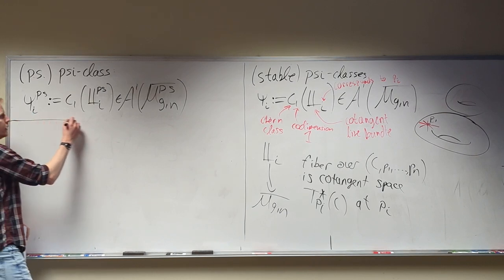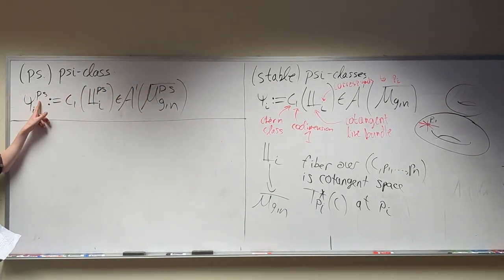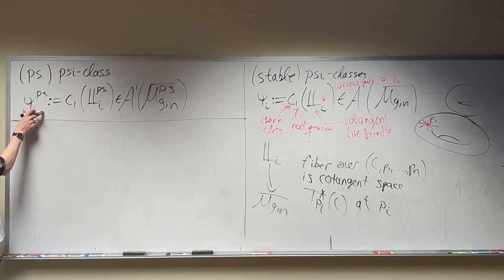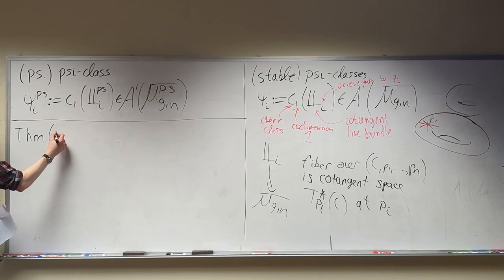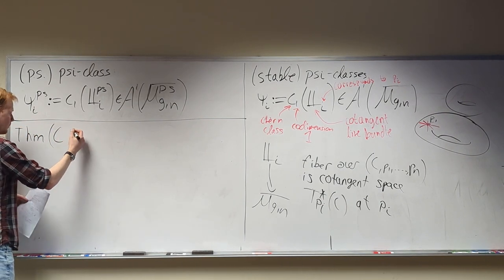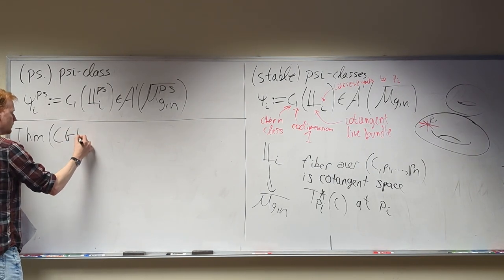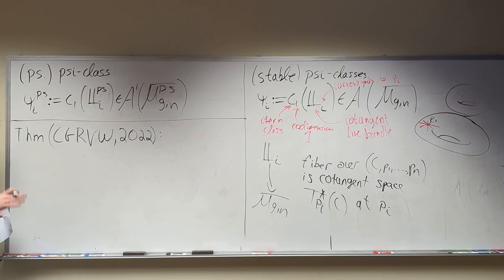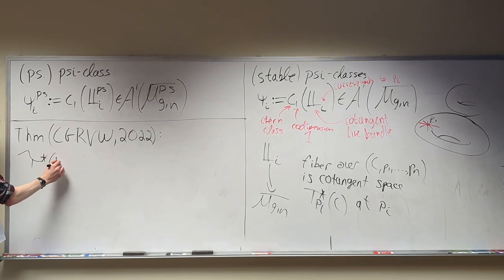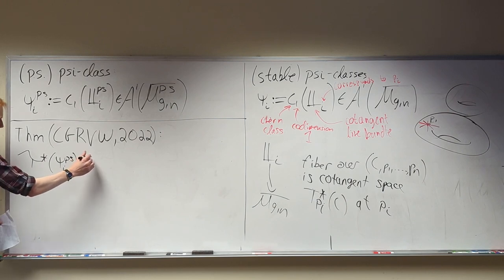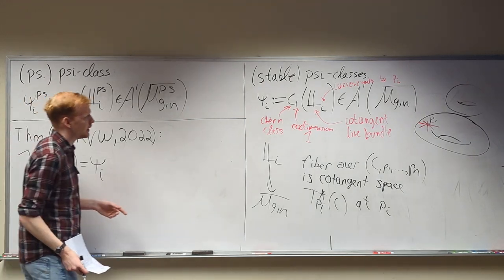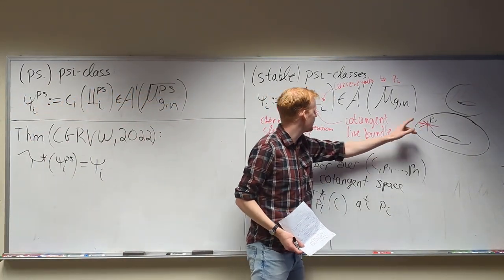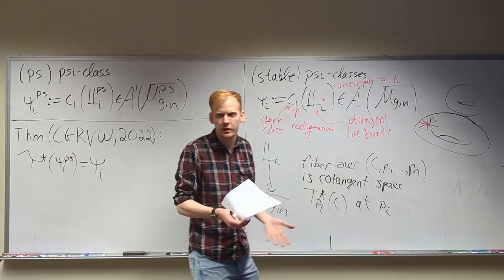If we want to deal with pseudo-stable curves, using our ray gun — that pullback — what is the pullback of one of these pseudo-stable psi classes? This is a theorem due to Renzo Cavalieri, Joel Galagos, Dustin Ross, Brandon Vanover, and Jonathan Wise in 2022. They showed the pullback of one of these pseudo-stable psi classes is exactly the stable psi class. The reason is that the pullback doesn't do anything to the marked points, and psi classes correspond to marked points, so nothing is changing there.